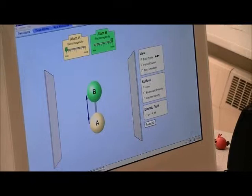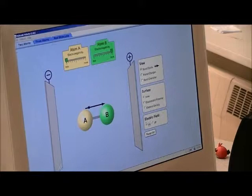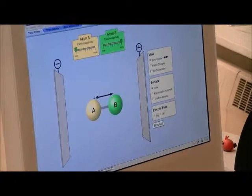If I have the molecule, say, like this, and then I make an electric field, you can see how the molecule will align itself depending on where the electrons are.